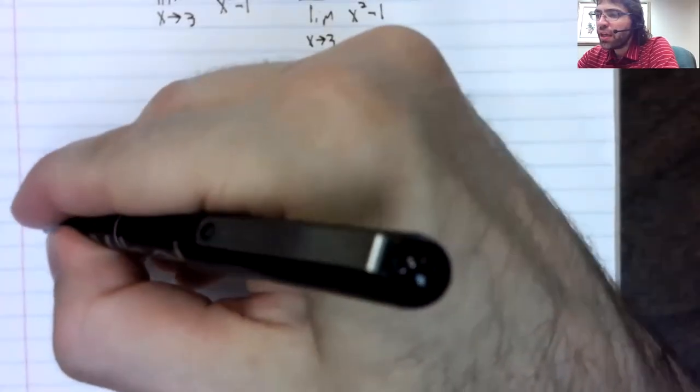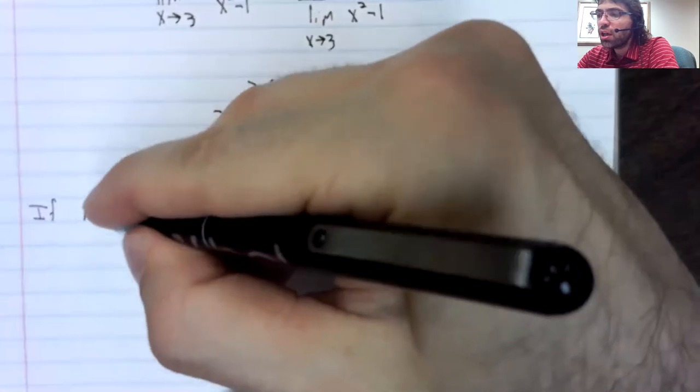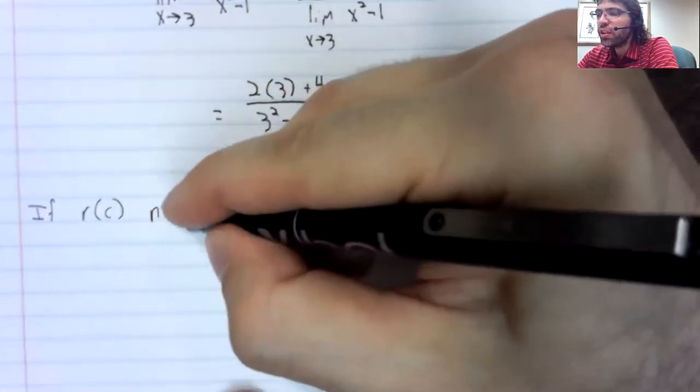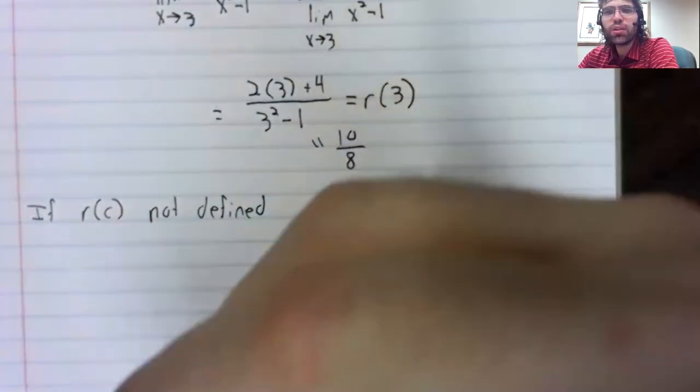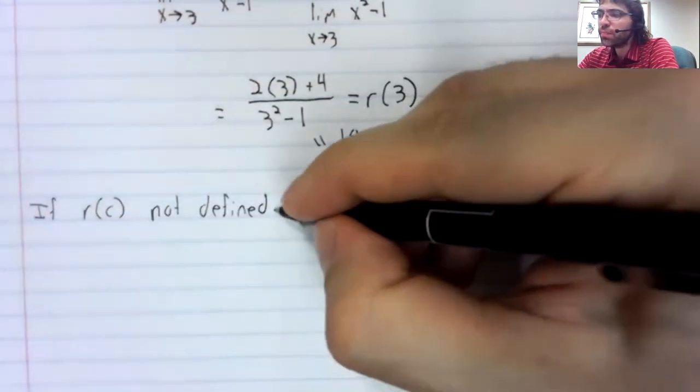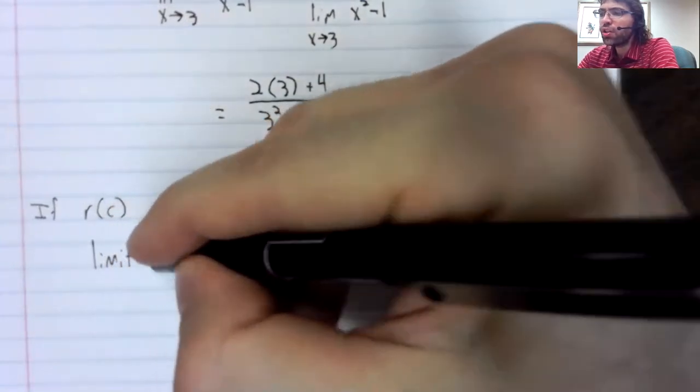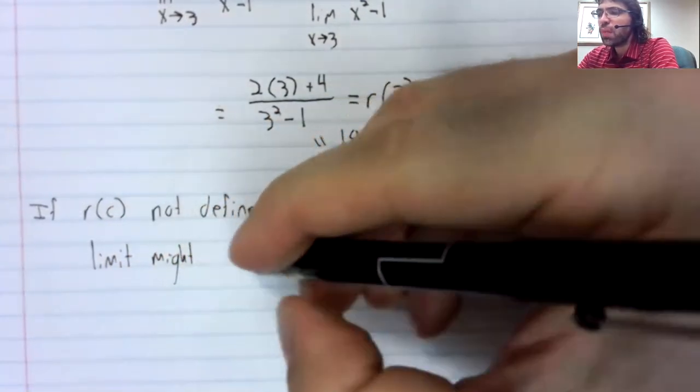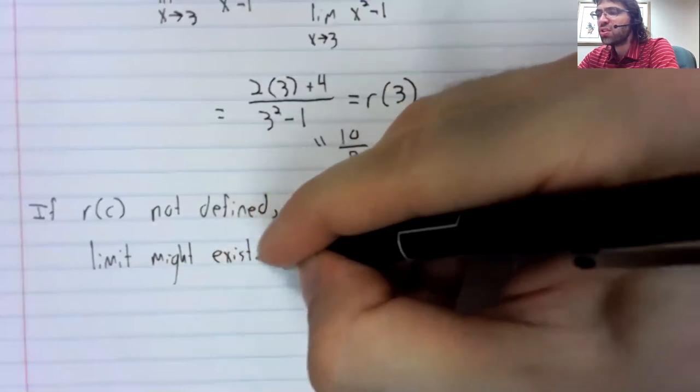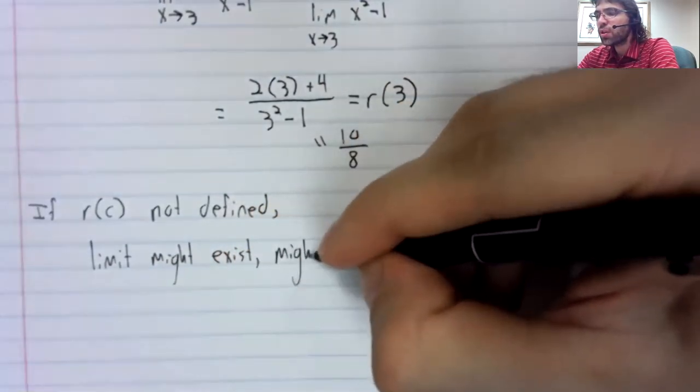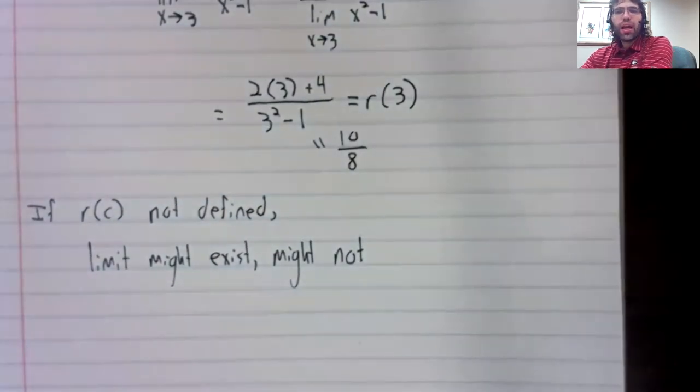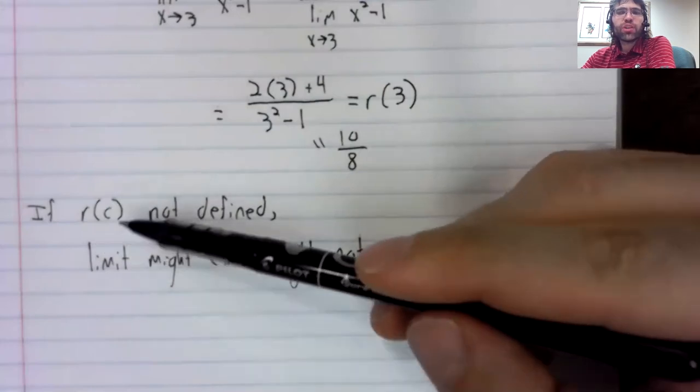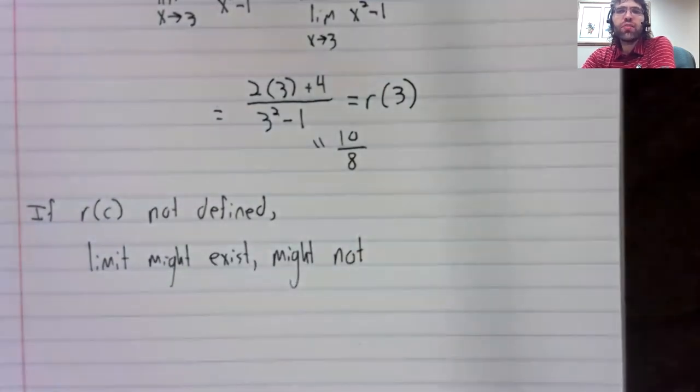And if r of c is not defined, what does that mean? Well, the limit might exist, or it might not. And we'll talk more about this special case towards the end of this section.